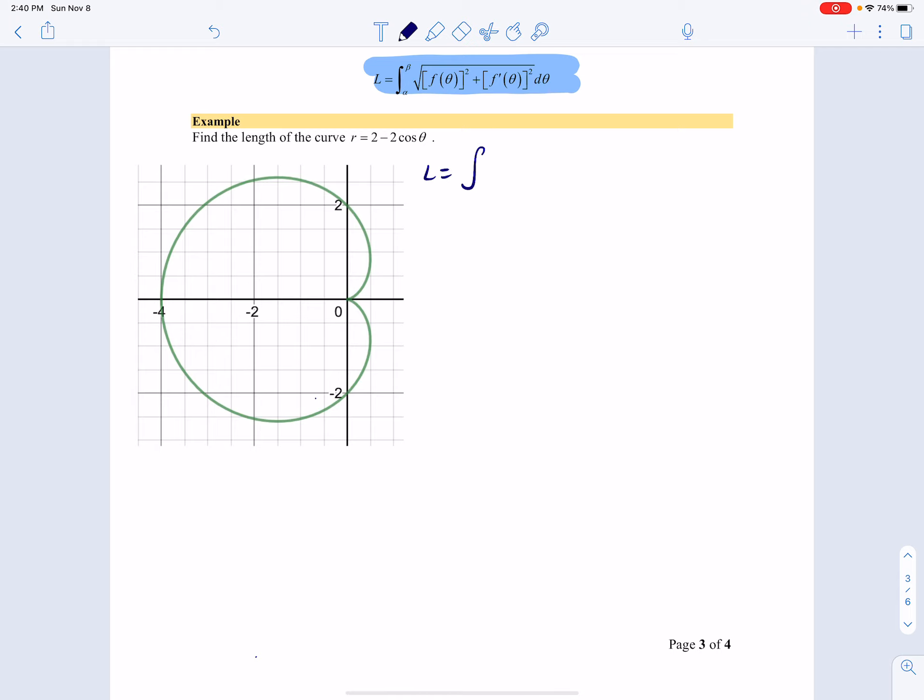So the length is equal to, and this curve is traced out from 0 to 2 pi. So that's going to be my limits of integration. And under the radical, we have the original function squared plus the derivative squared.